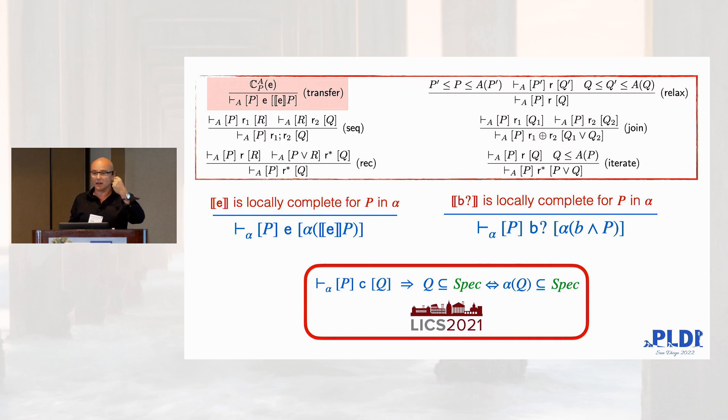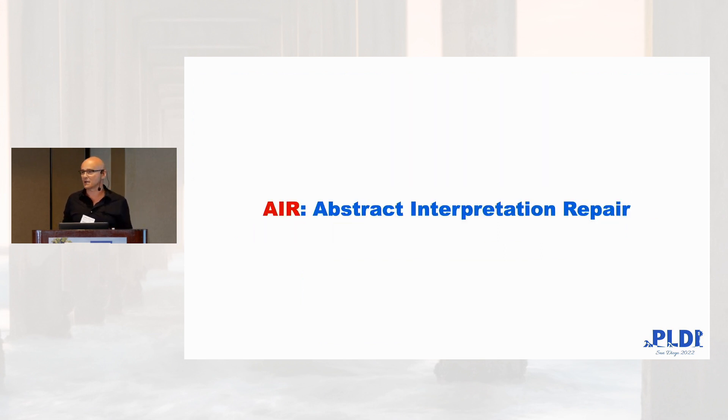which gives some kind of constraints on the way you want to prove completeness. You have to be locally complete for the basic transfer functions. So you need an abstraction refinement that we call abstract interpretation repair. So you need to repair for that specific input in that point that transfer function.